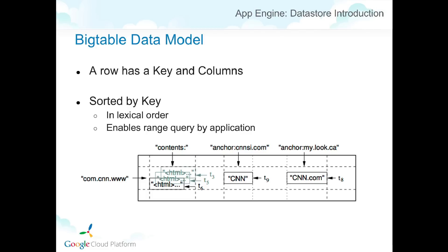This is the Bigtable data model. Bigtable is a key-value data storage where values are called columns. Internally, data is sorted by key in lexical order. The facts are sorted by key to enable range queries by applications — meaning the users of Bigtable.